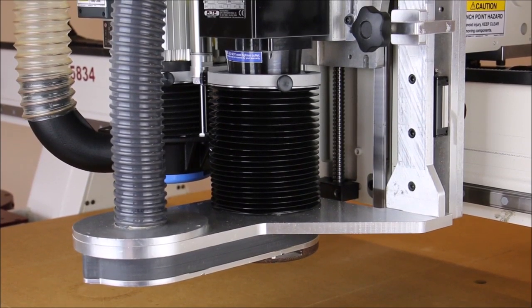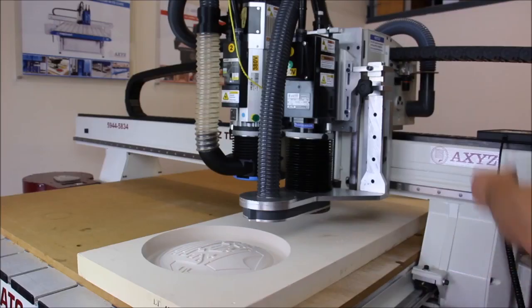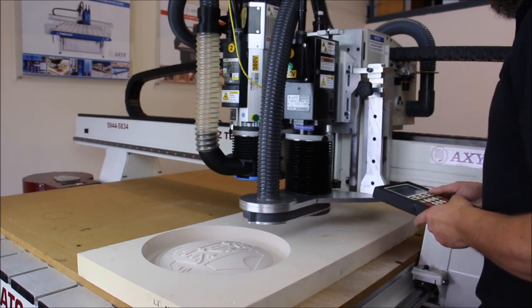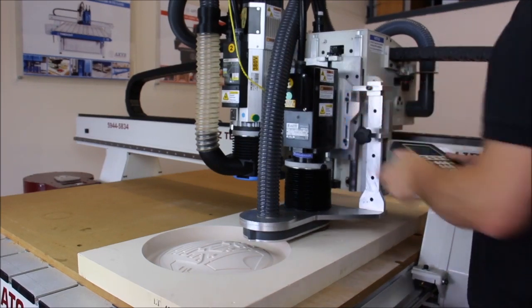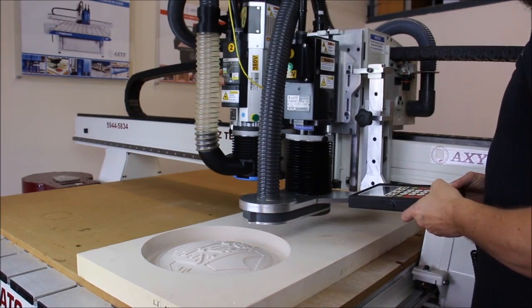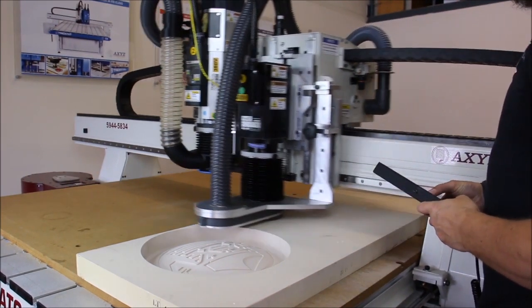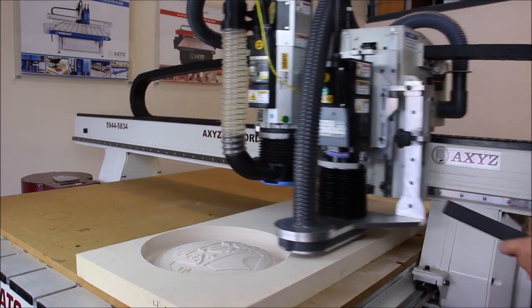This is where the universal 5Y pressure foot should be used. The 5Y is set at a designated height above the material, allowing the spindle to move in the Z direction freely, whilst the foot can keep a constant set height and will only move up when the cutting process is finished.